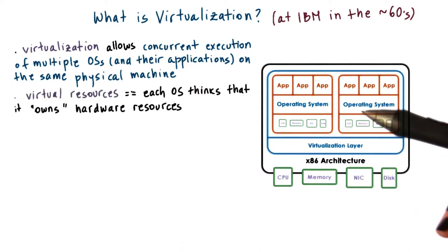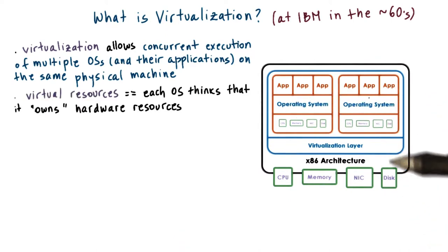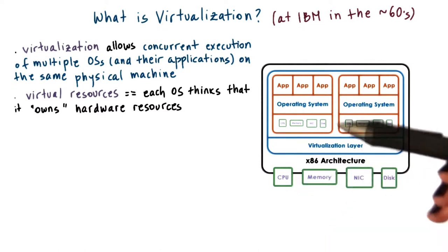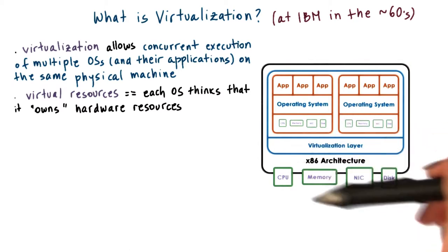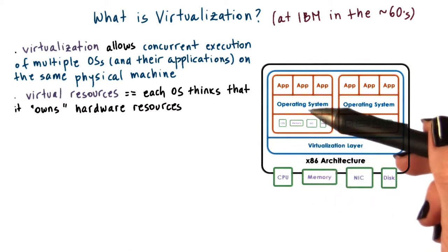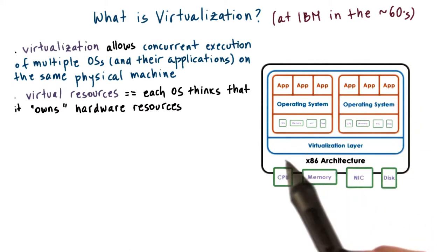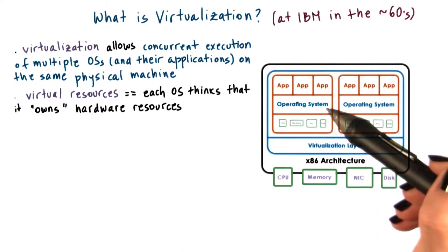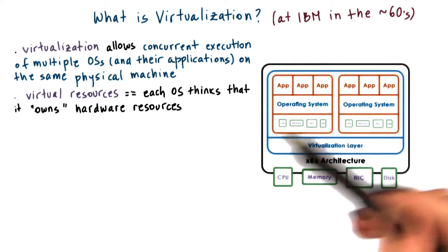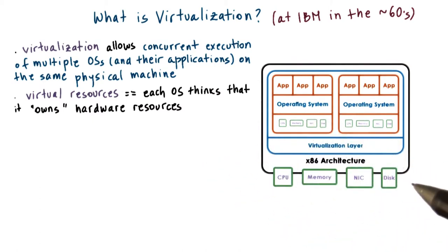With virtualization, each of the operating systems that are deployed on the same physical platform has an illusion that it actually owns the underlying hardware resources, or at least some smaller portion of them. For instance, the operating system may think that it owns some smaller amount of memory compared to the memory that's actually available on the physical machine.